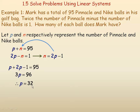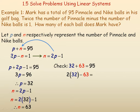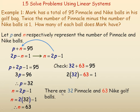Now we need to find the number of Nike balls. Using the equation N equals 2P minus 1 and replacing P with 32: 2 times 32 is 64, minus 1 is 63. So the number of Nike balls is 63. Checking: P plus N equals 32 plus 63, which is 95. And 2 times 32 minus 63 equals 64 minus 63, which equals 1. It checks in both equations. There are 32 Pinnacle and 63 Nike golf balls.